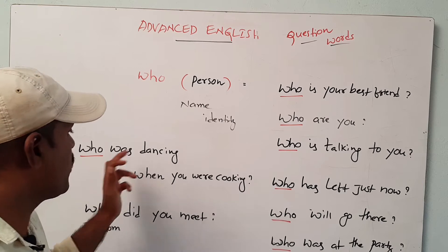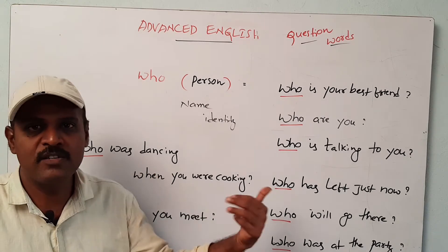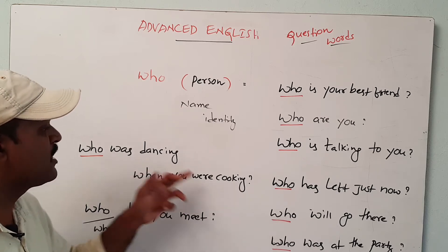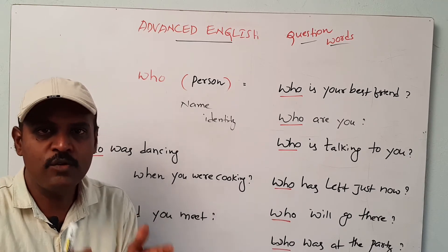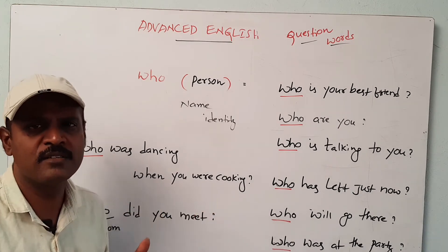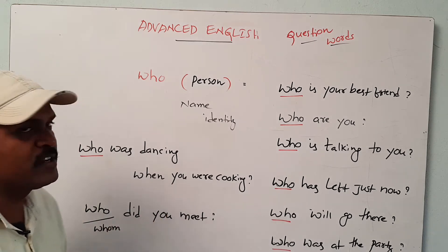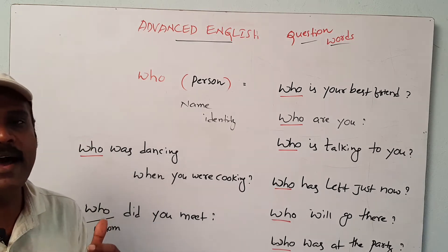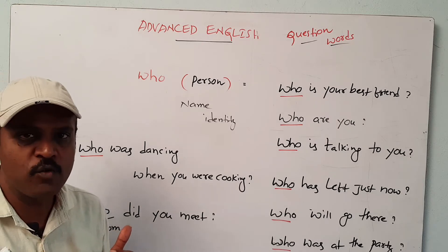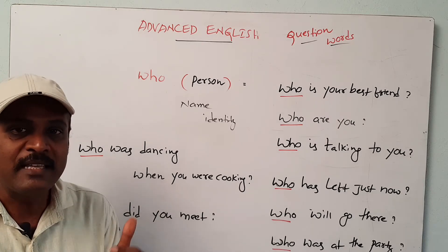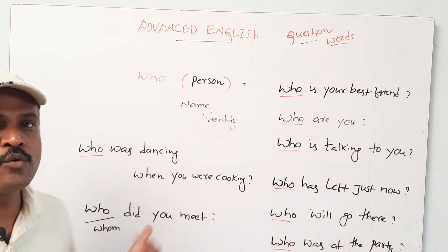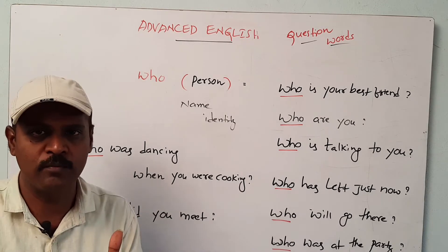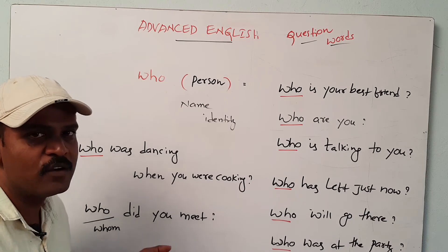Next: 'Who was dancing when you were cooking?' — this is a little bit lengthy sentence. We can see two actions: one is dancing and the second one is cooking. When you are cooking, someone was dancing — who is that? Next: 'Who did you meet?' — 'who did you meet' actually means 'whom did you meet'. But nowadays 'whom' has been omitted day by day. In modern use, instead of 'whom', most of the time 'who' can be used. So there is no problem if you use 'who' or 'whom'.